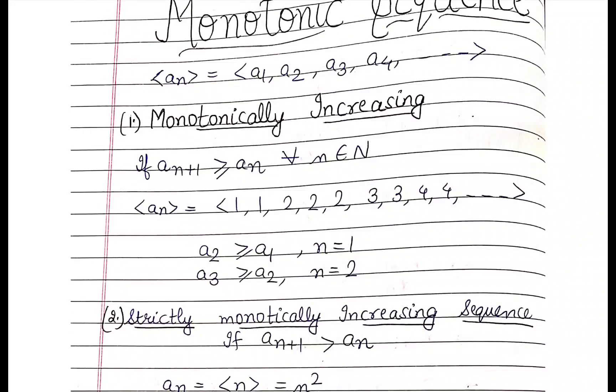Now, when do we call a sequence monotonically increasing? If we have a sequence a_n: a1, a2, a3, a4, and so on, if a_(n+1) is greater than or equal to a_n, then that sequence is monotonically increasing.